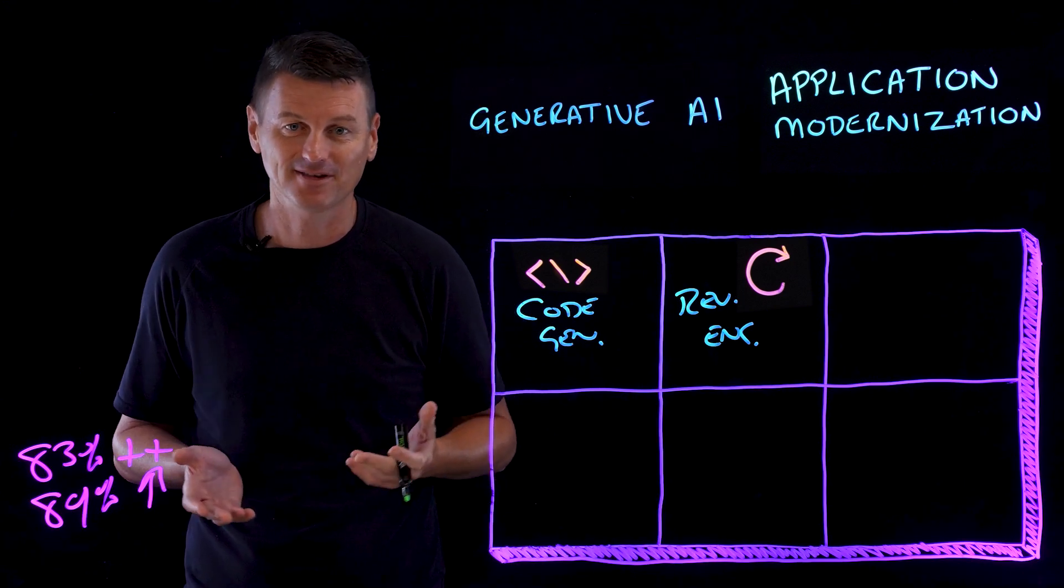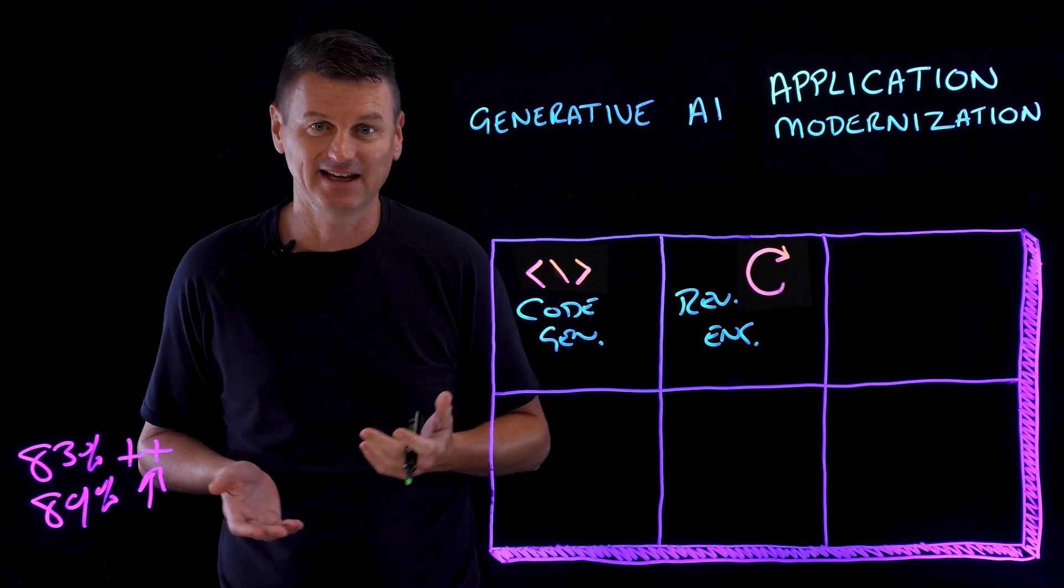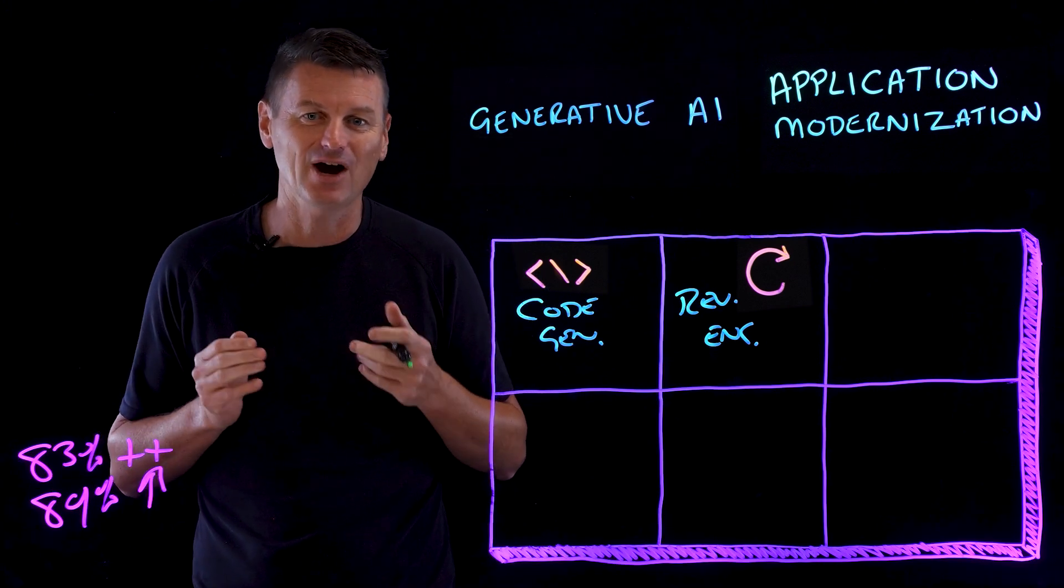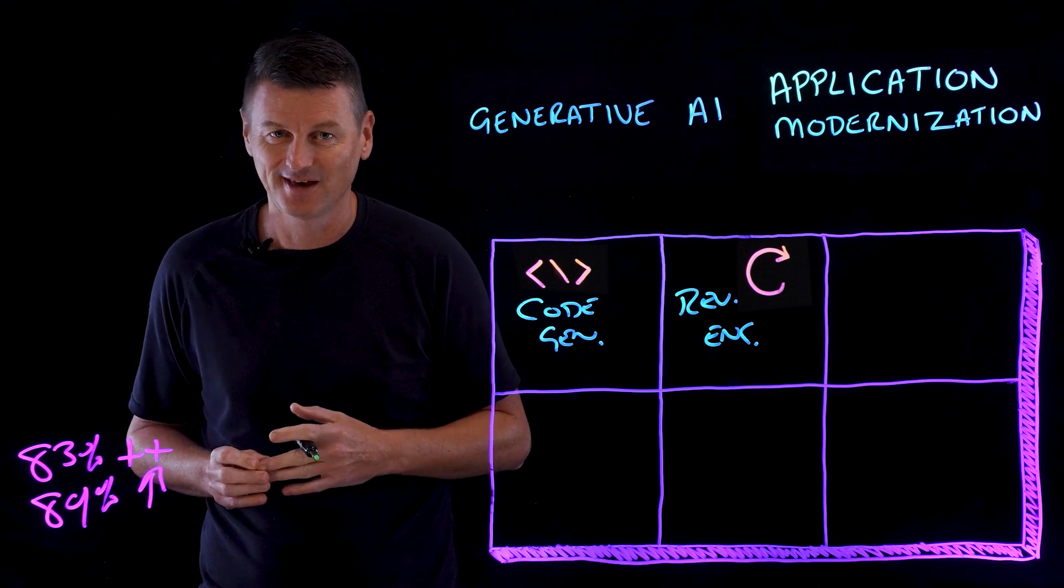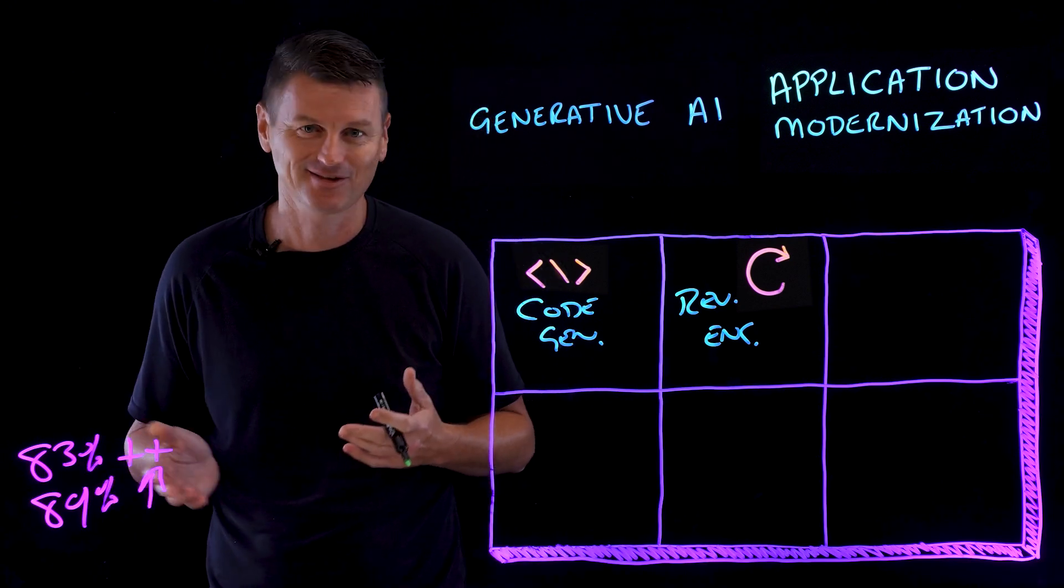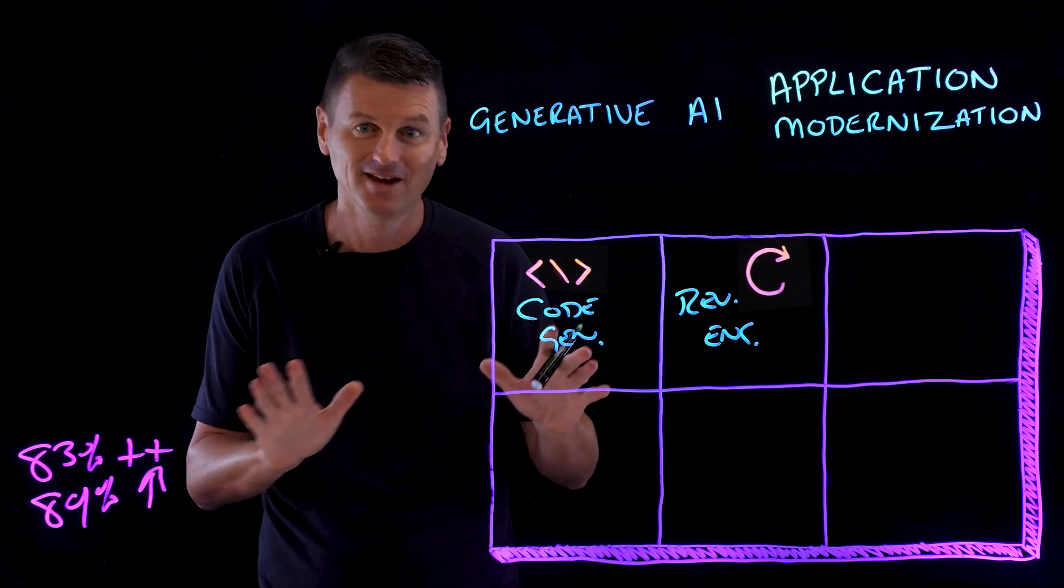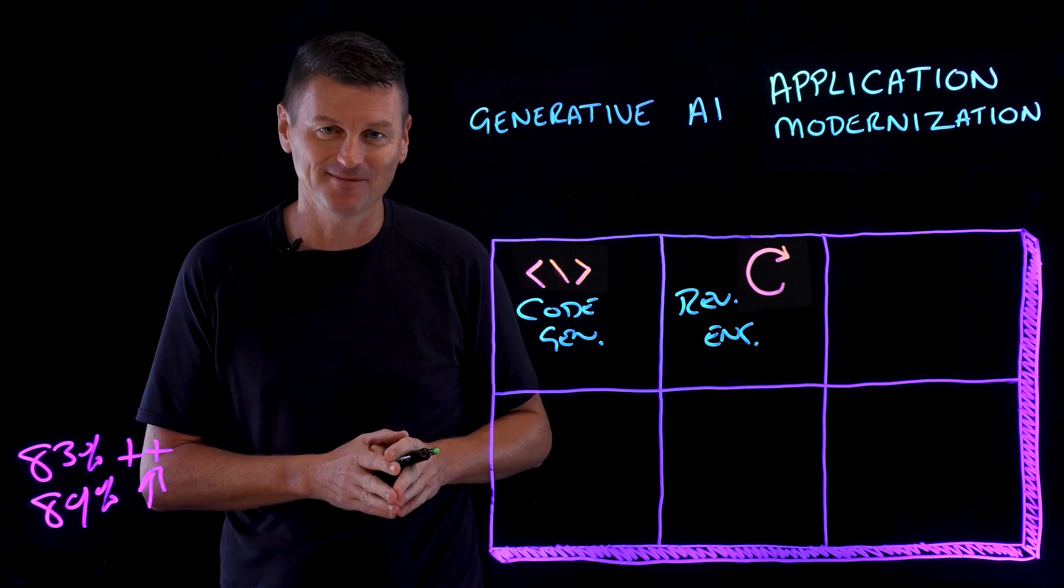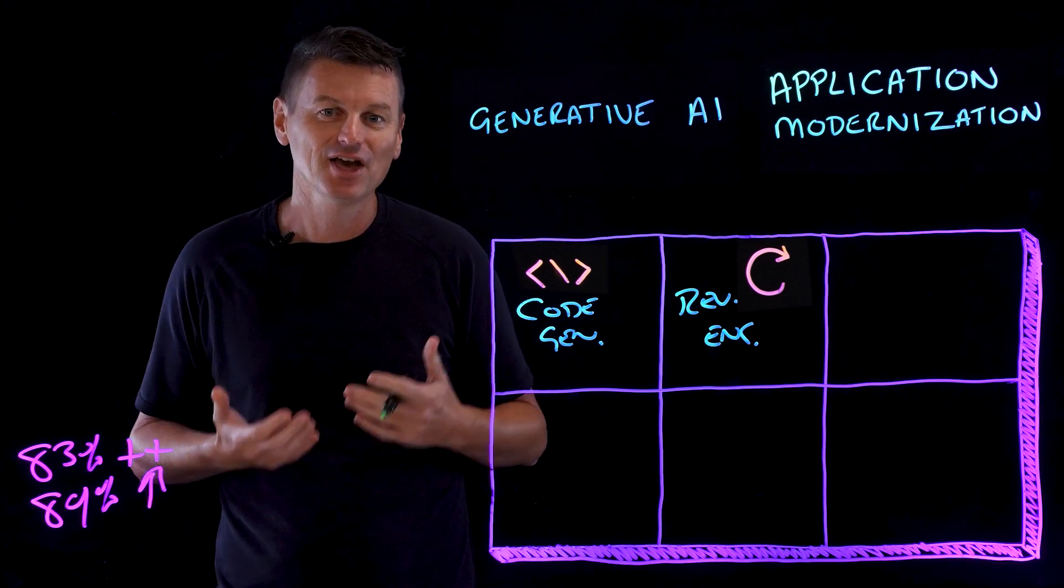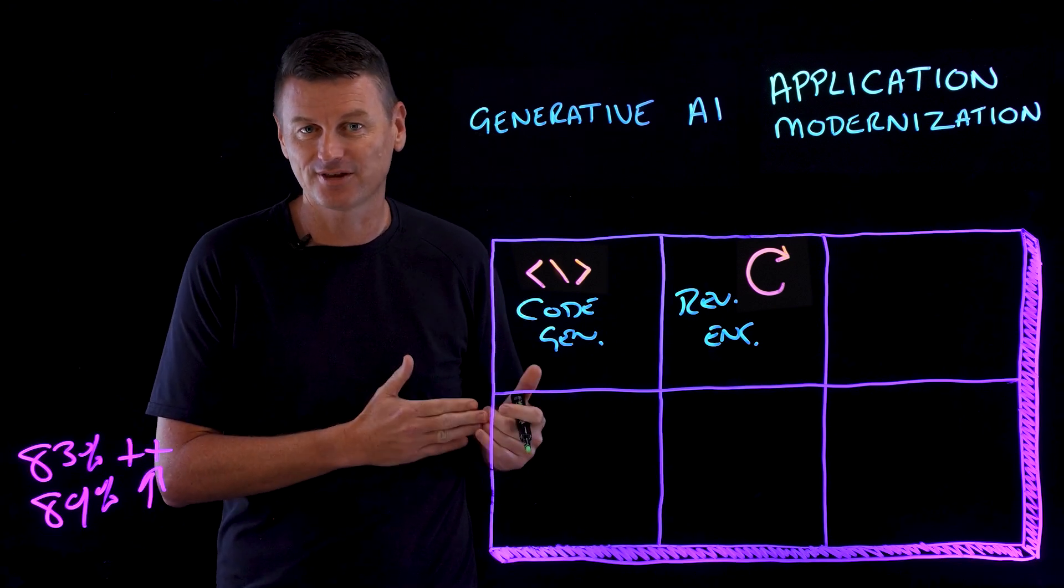So consider a legacy CRM system. Perhaps it was built like in the late 90s. It's integral to a company's operations, but is now riddled with inefficiencies. The original developers have moved on and the documentation is, well, let's just call it sparse. Well, generative AI can dive into this system, identify its various operations and with a bit of assistance, generate a modern equivalent of the software.